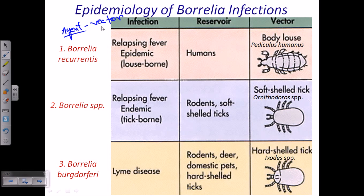The first type is Borrelia recurrentis, which is responsible for causing epidemic relapsing fever, which is louse-borne — meaning the vector is the body louse. As you can see in this picture, all of them are having arthropod vectors such as louse, hard-shelled tick, and soft-shelled tick. In this case, the reservoir is humans, which is why this is epidemic in nature.